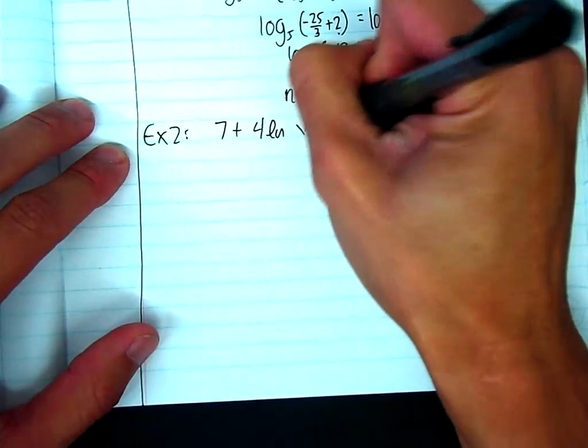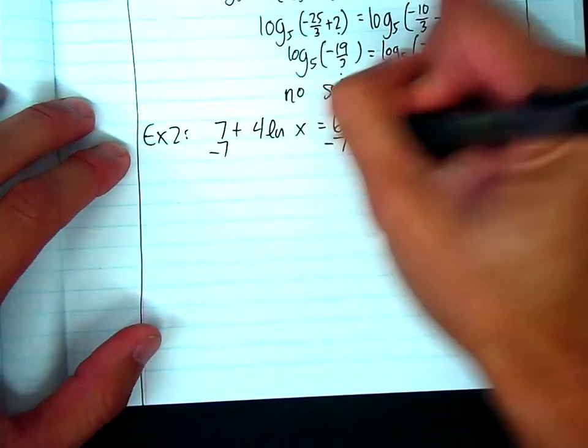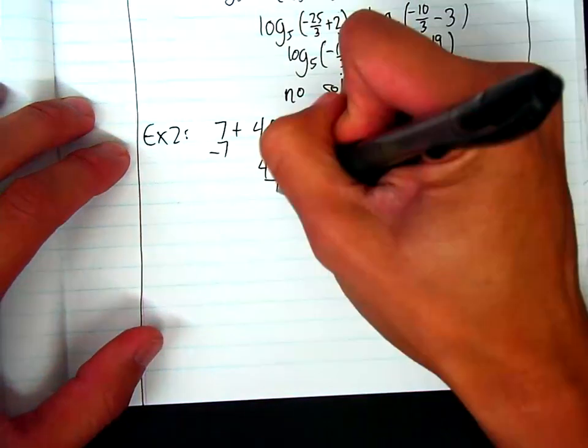So from there, I will subtract 7. I'll get 4 natural log of x equals negative 1. And then I will divide by 4. I'll get natural log of x equals negative 1 fourth.